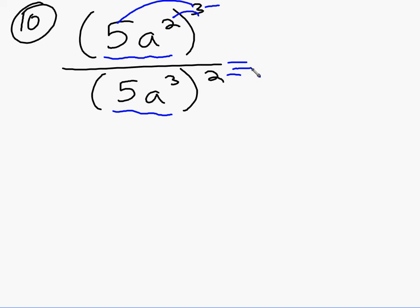What I have to do is distribute that power to both of these terms on the inside. So the top becomes 5 to the third... wait, let me correct that. When you have a power to a power, you multiply. So what's 2 times 3? 6. So it would be a to the sixth. We distribute the power to both. Down here, I do the same thing. Distribute the second power to both. So it will be 5 squared, a to the sixth.